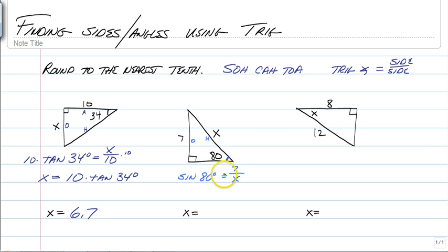When you have x in the denominator, what you want to do is you just want to switch both of these. So then we have x is equal to 7 divided by the sine of 80 degrees. Type it in your calculator, 7 divided by the sine of 80, and you are going to end up with 7.1. Again, make sure your calculator is in degrees. If you are not getting the same answers as I am, that means you probably have your calculator in radians.